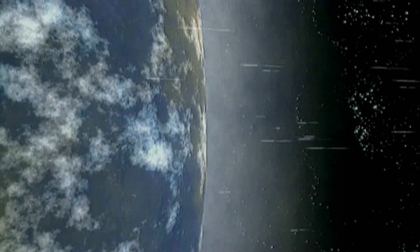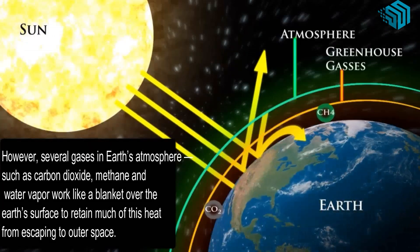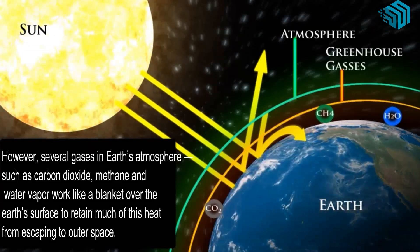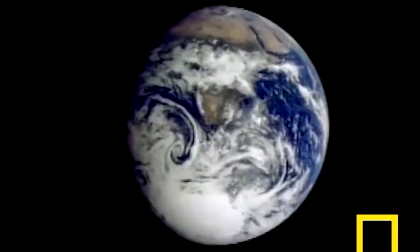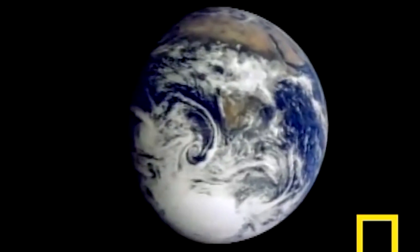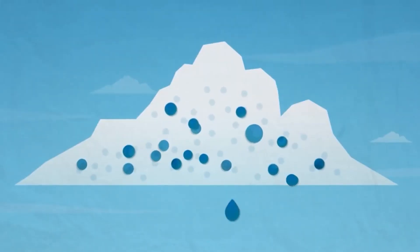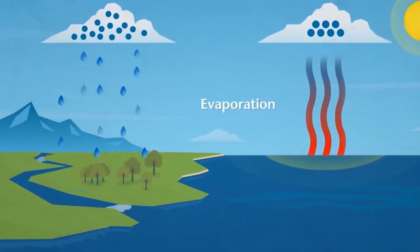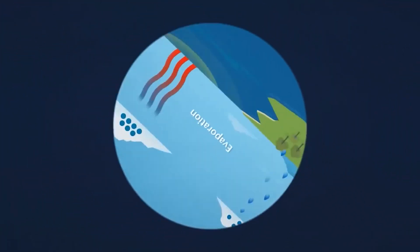Earth's early atmosphere was also crucial for water retention. Composed primarily of hydrogen, helium, water vapor, and other volatile gases, the early atmosphere created a greenhouse effect that kept surface temperatures warm enough for liquid water to exist. As water vapor condensed, the first rain fell, and rivers and lakes began to form, laying the groundwork for life on our planet.